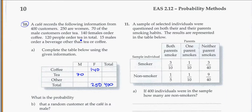And 120 people order tea in total. And here we've got one more information. 15 males order a beverage other than tea or coffee. So 15 there. So I'm putting in the information that I know.